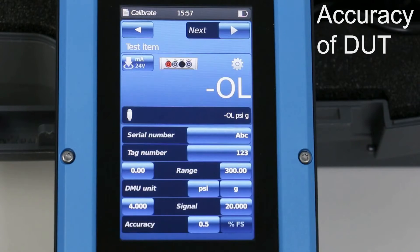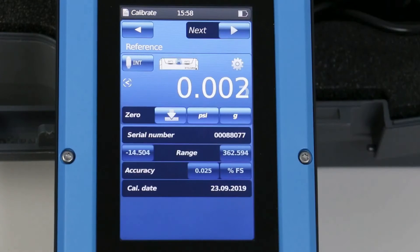The next button reveals the reference standard. In this case, we are using the internal sensor set to PSI gauge. The other parameters are automatically detected.